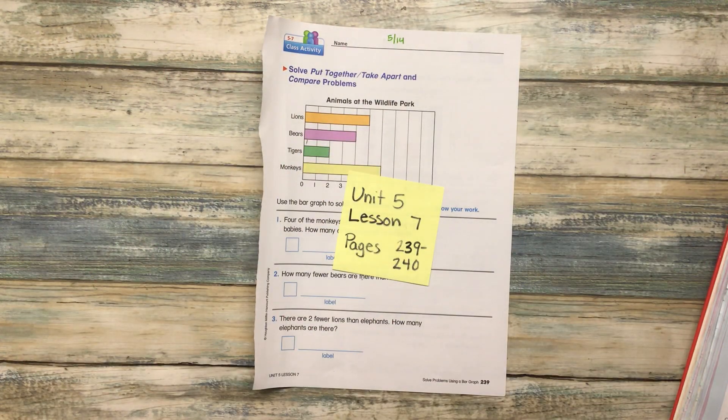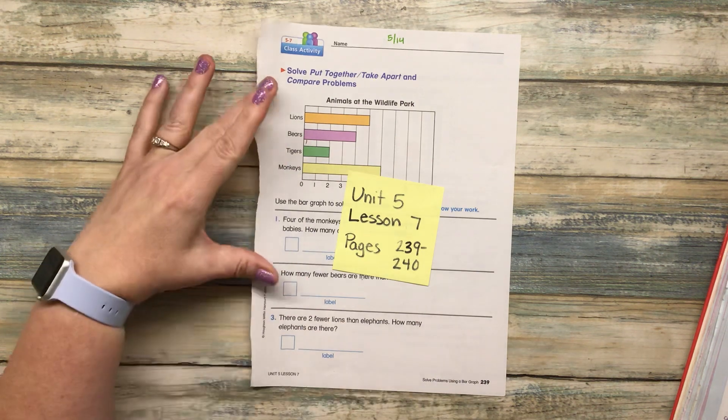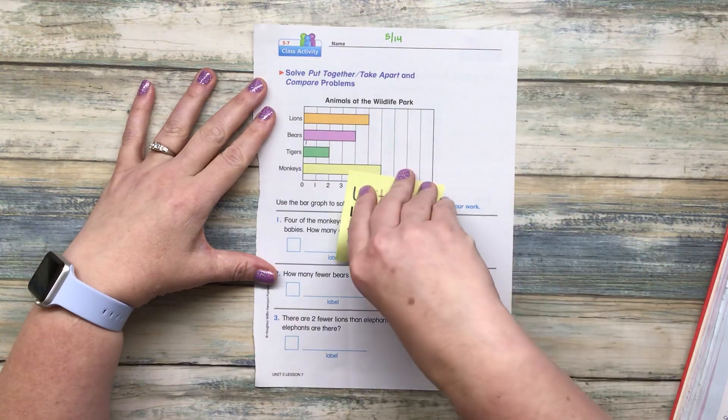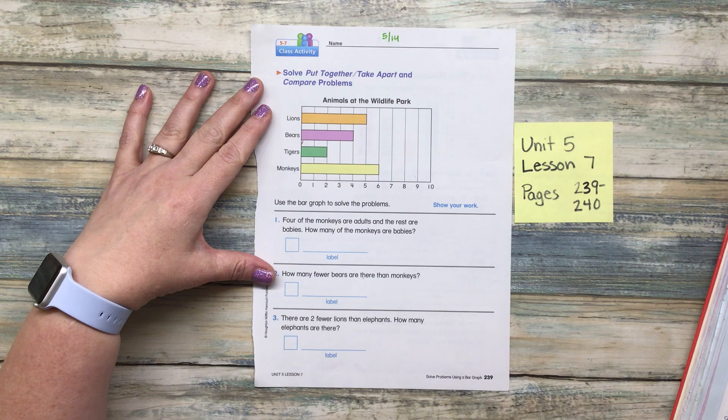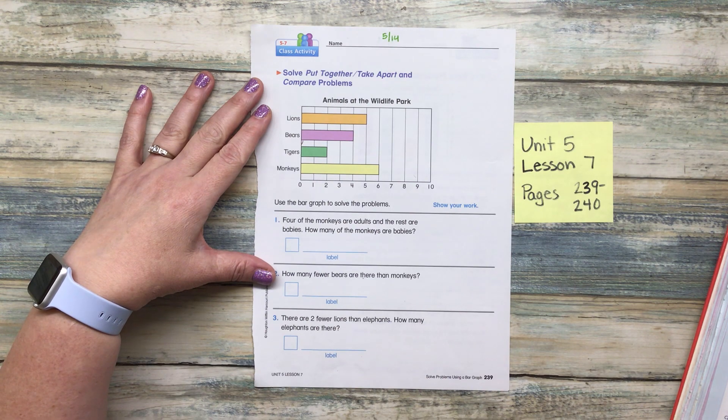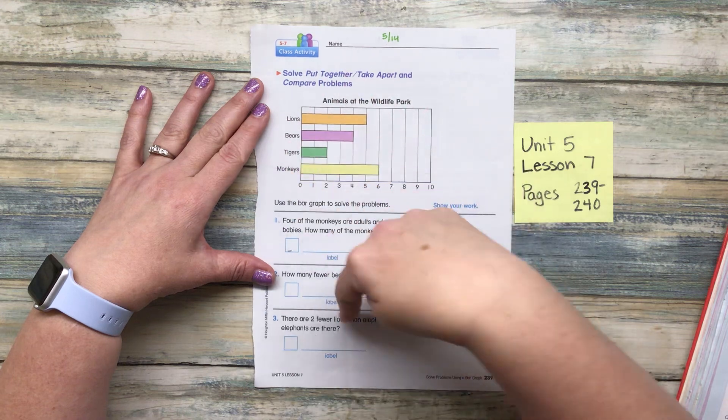All right. So we're going to solve some put together, take apart and compare problems with this one. What are we looking at here? What is this graph about?